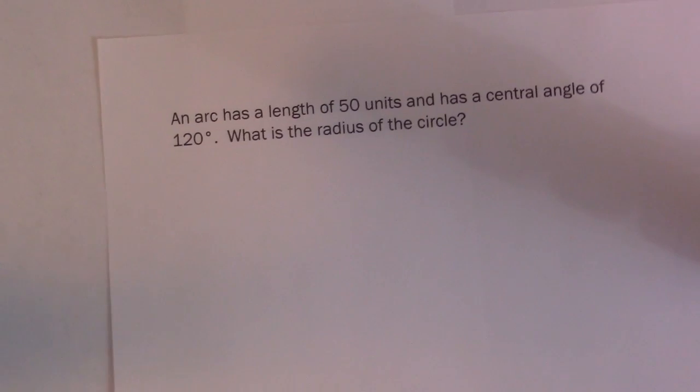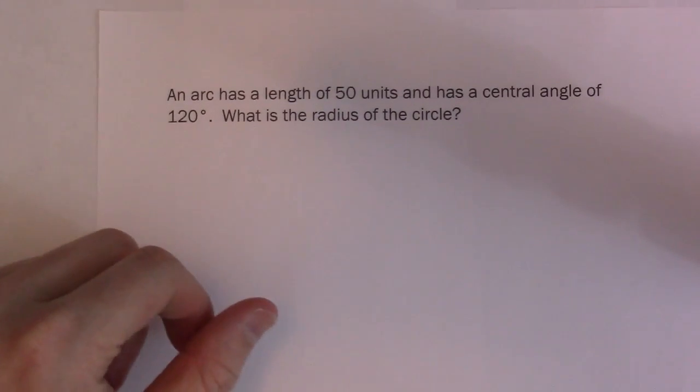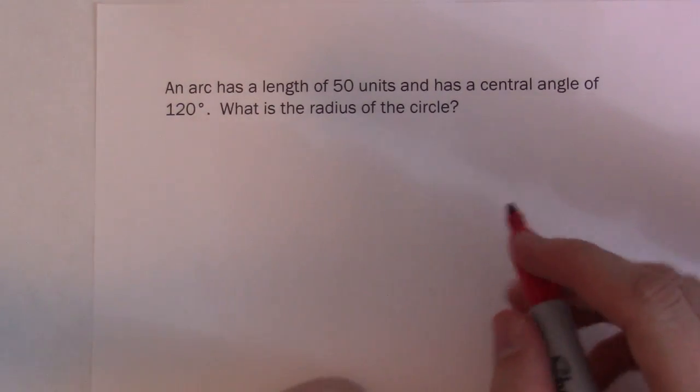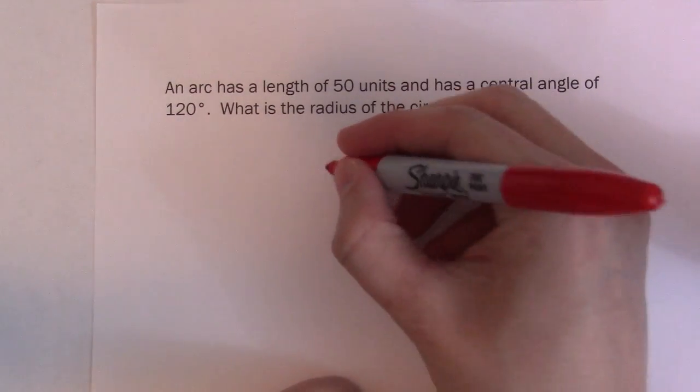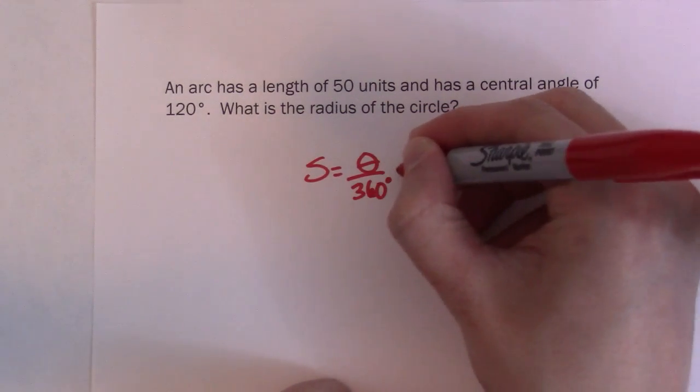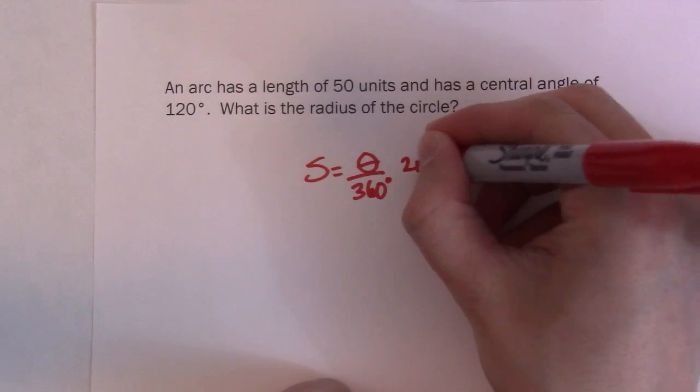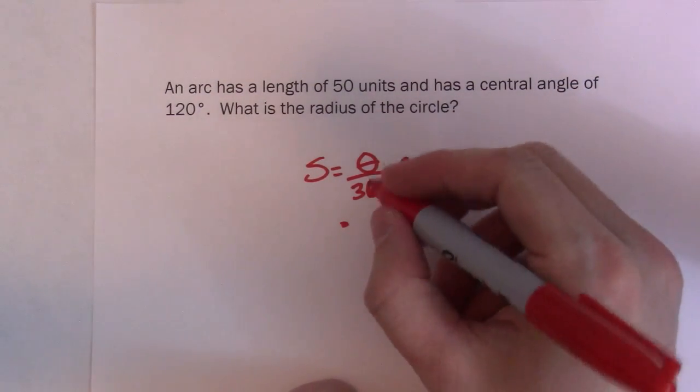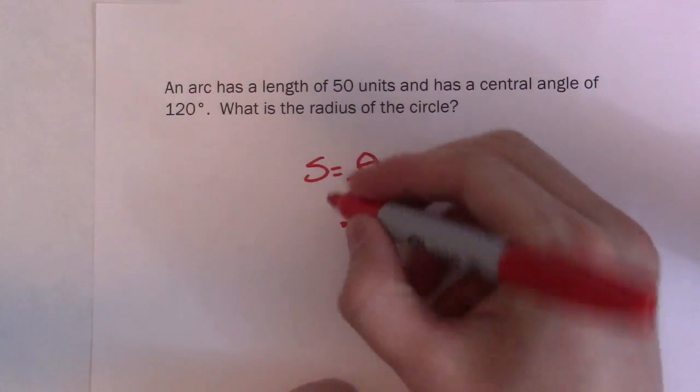We have an arc length of 50 units. So an arc has a length of 50 units and the central angle is 120. What is the radius of the circle? So again, we have to use our formula that's in degrees. 2 pi r. So we take our 120, and we know our arc length is 50.